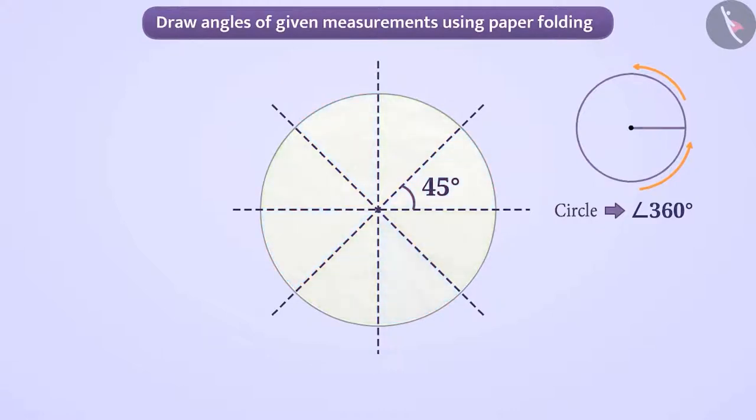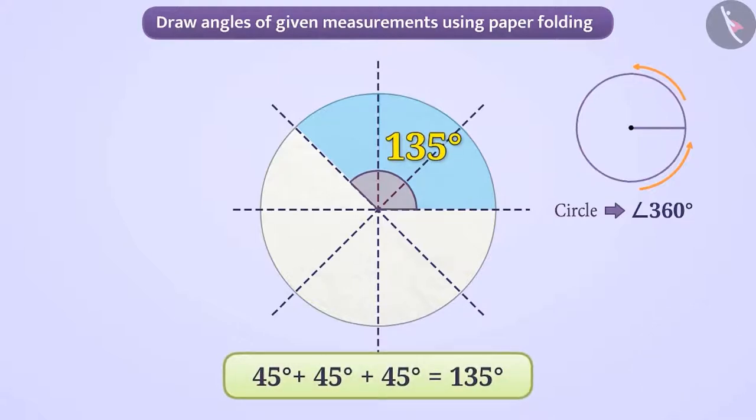Can you tell, from the 3 sections, what will be the measurement of the angle we get? Think, think. Exactly. We will get an angle measuring 135 degrees.